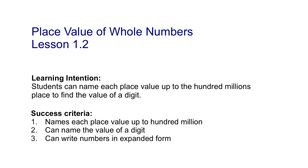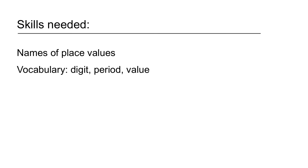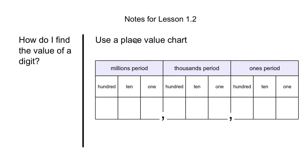Hello, this is a lesson on place value of whole numbers, and it goes with Go Math lesson 1.2. Our intention today is that you, the students, can name each place value to the hundred millions place and find the value of any digit within a larger number. Here are our notes, and it starts with a question: how do I find the value of a digit? We're going to be using a place value chart for that today.